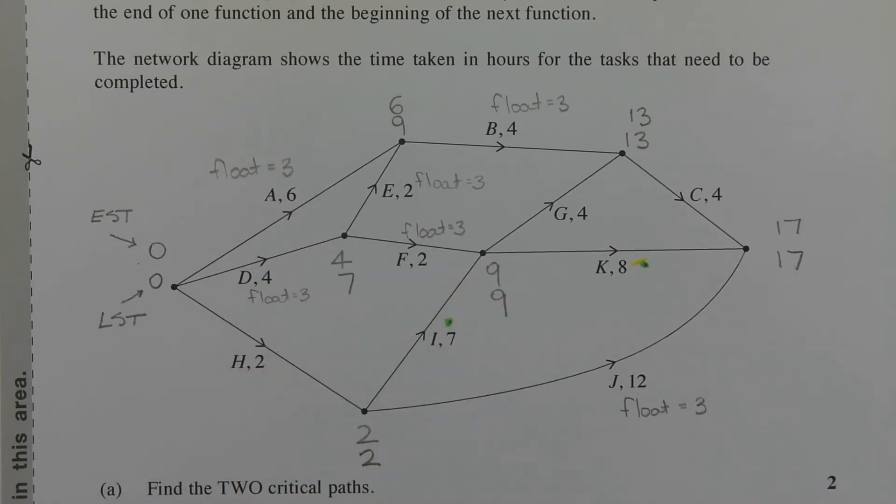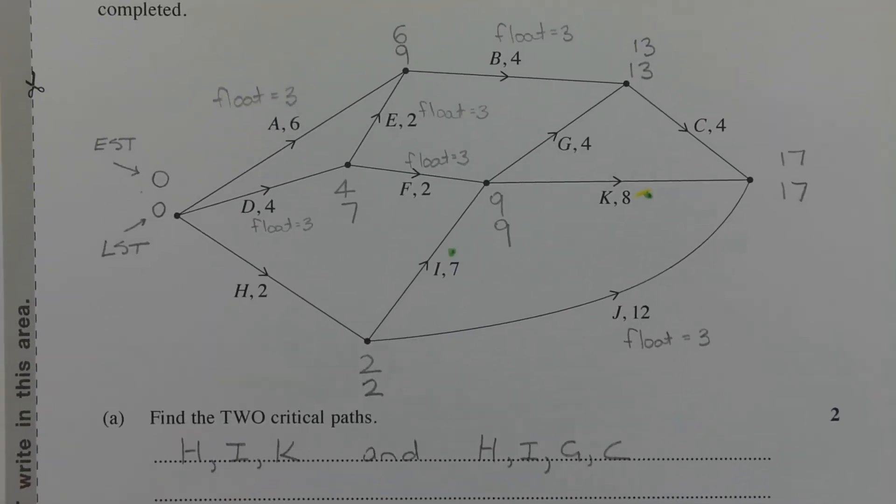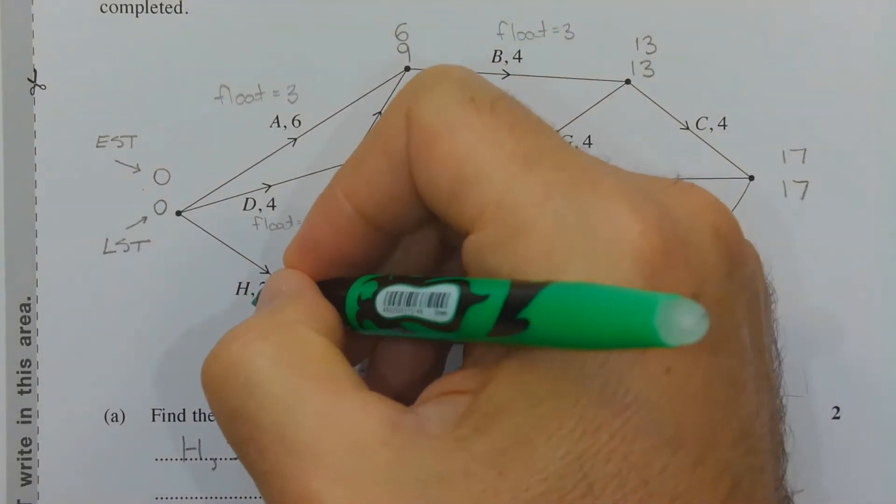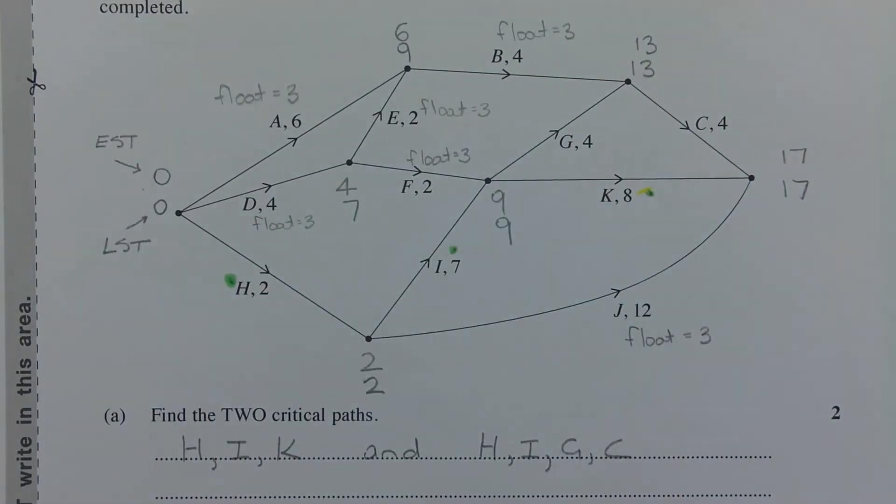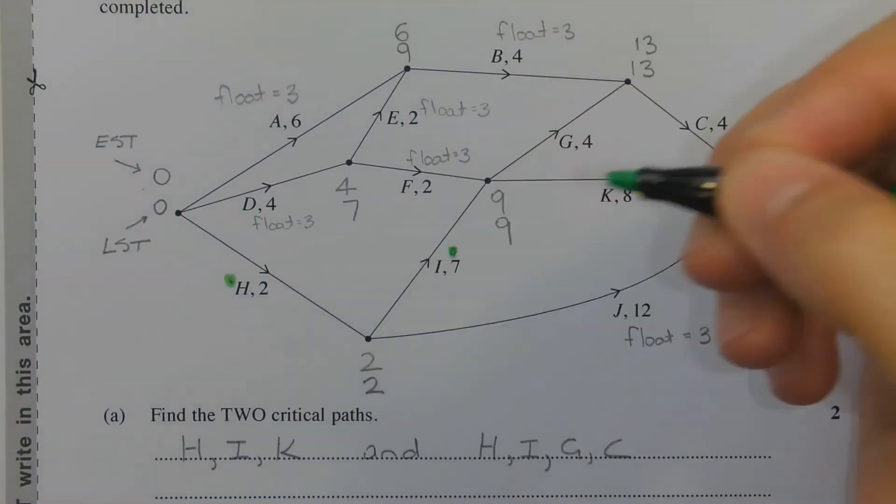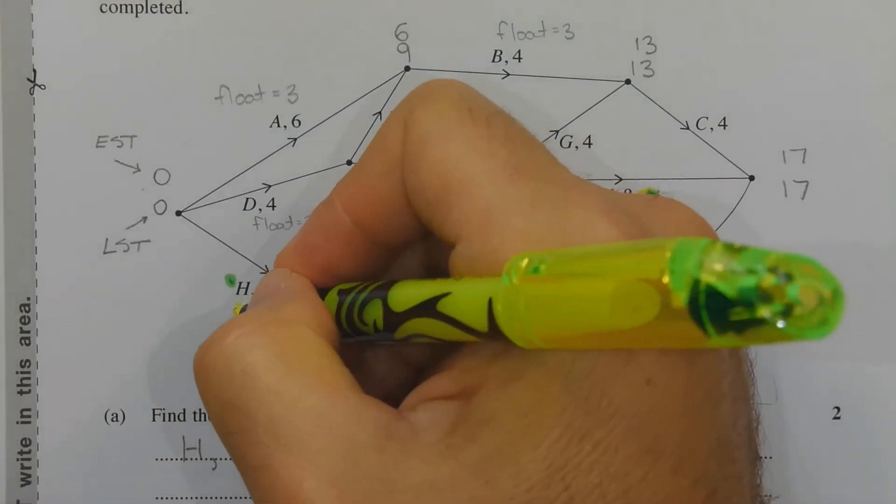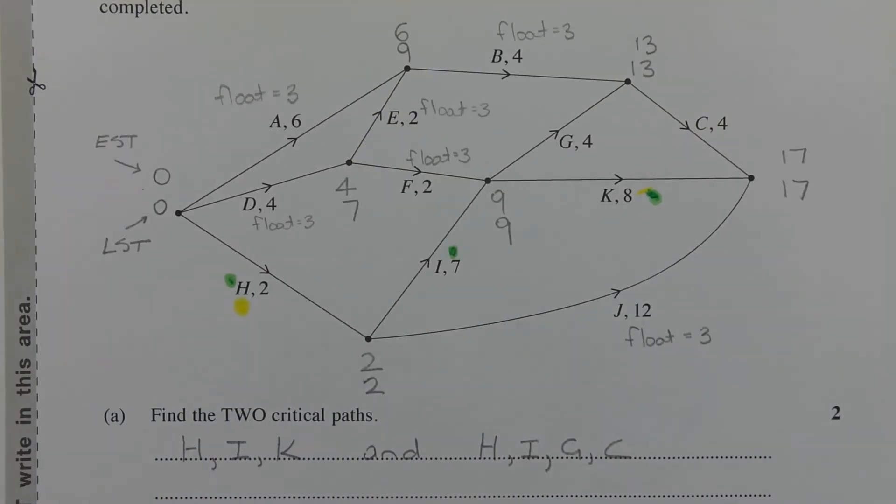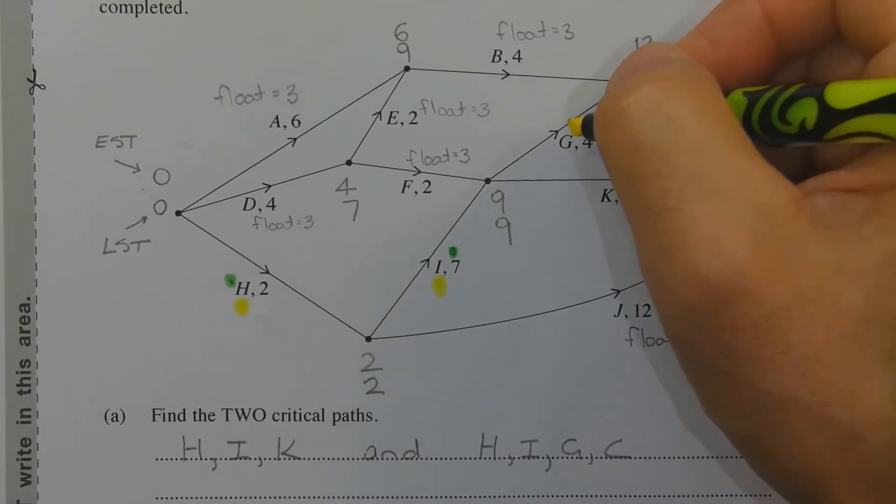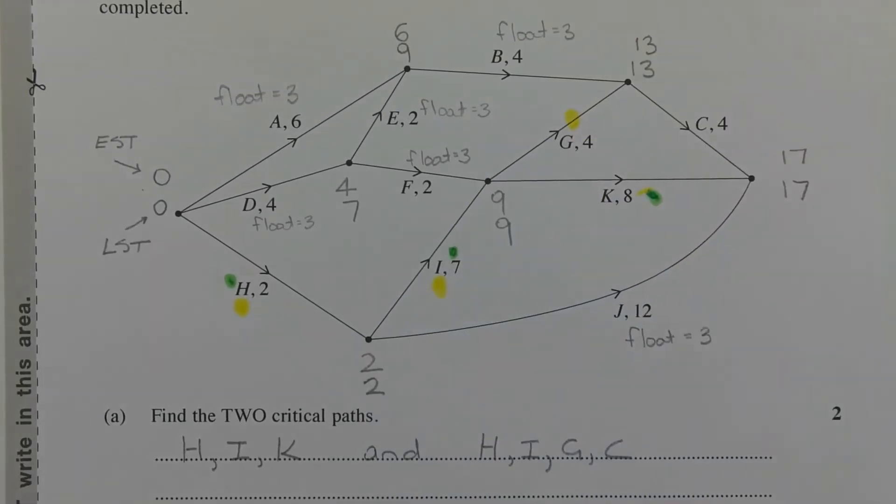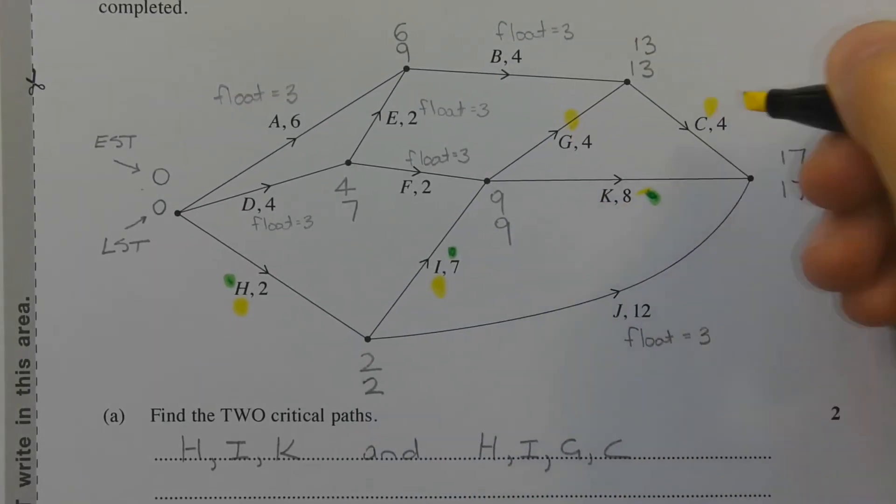And so the two critical paths are H, I and K. So that's this task here, this task here, and this task here, and H, I, G, C. Part B. So I'll try and use the yellow highlighter again. Make that a little bit more prominent. So H, I, G, and C.